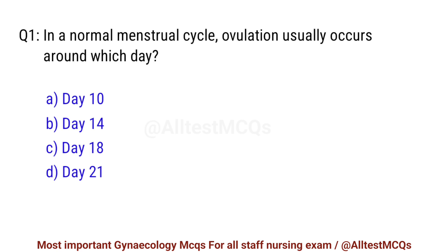Question No. 1. In a normal menstrual cycle, ovulation usually occurs around which day? Correct option is B. Day 14.